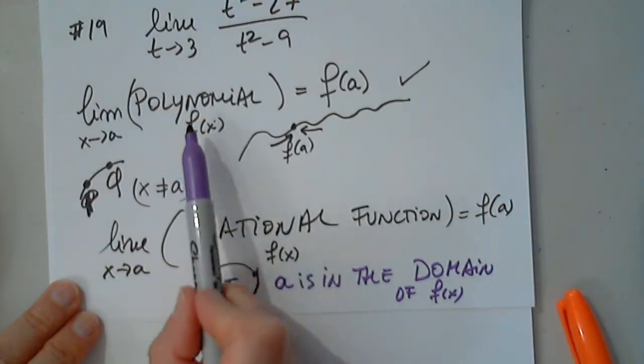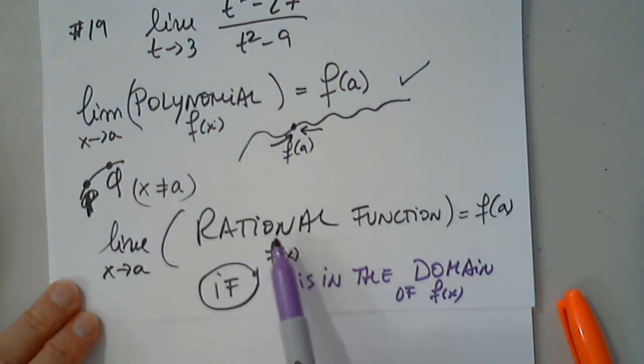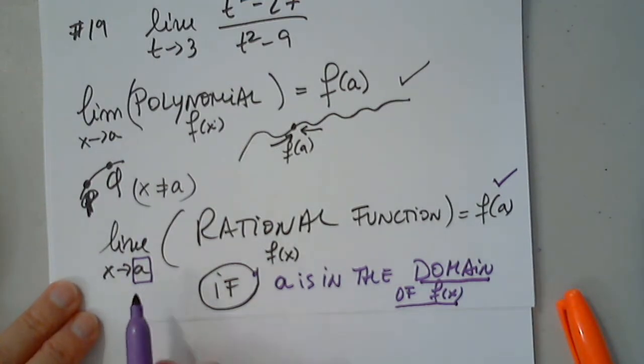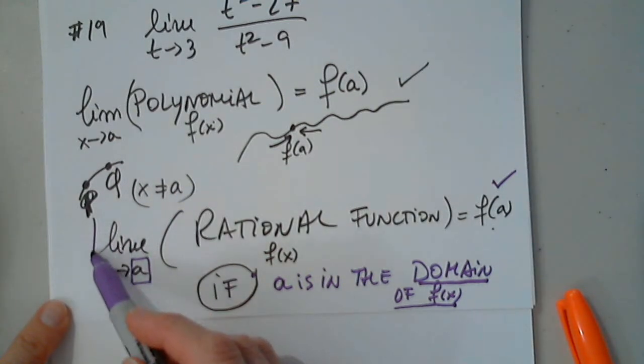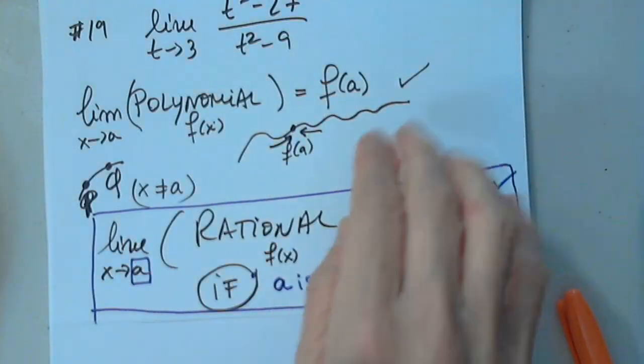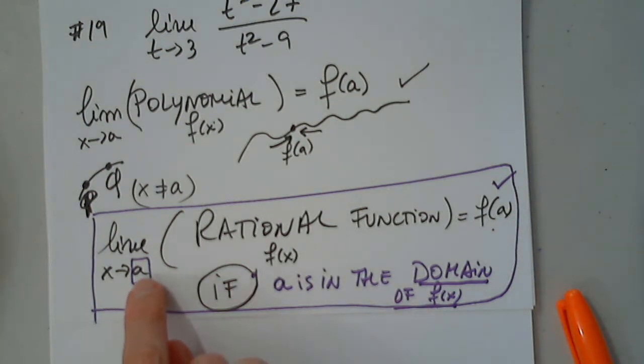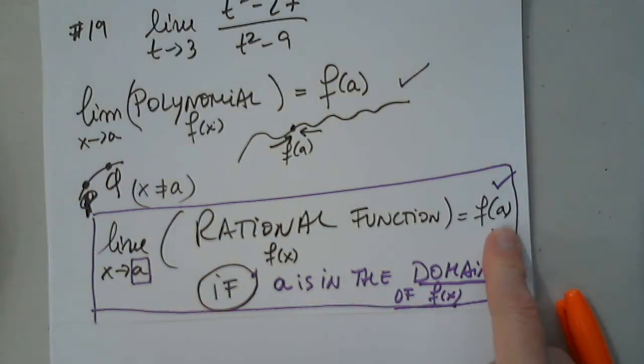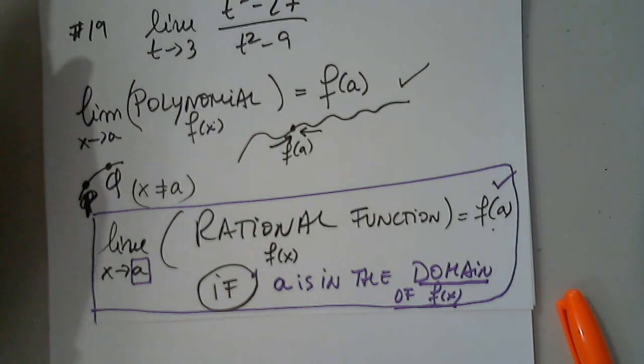The denominator equals zero. Exactly. As long as if a is in the domain of f of x. In other words, if a makes the denominator zero, this is undefined. Excellent. So, that's what happens to rational functions. They may be undefined, which never happens here.